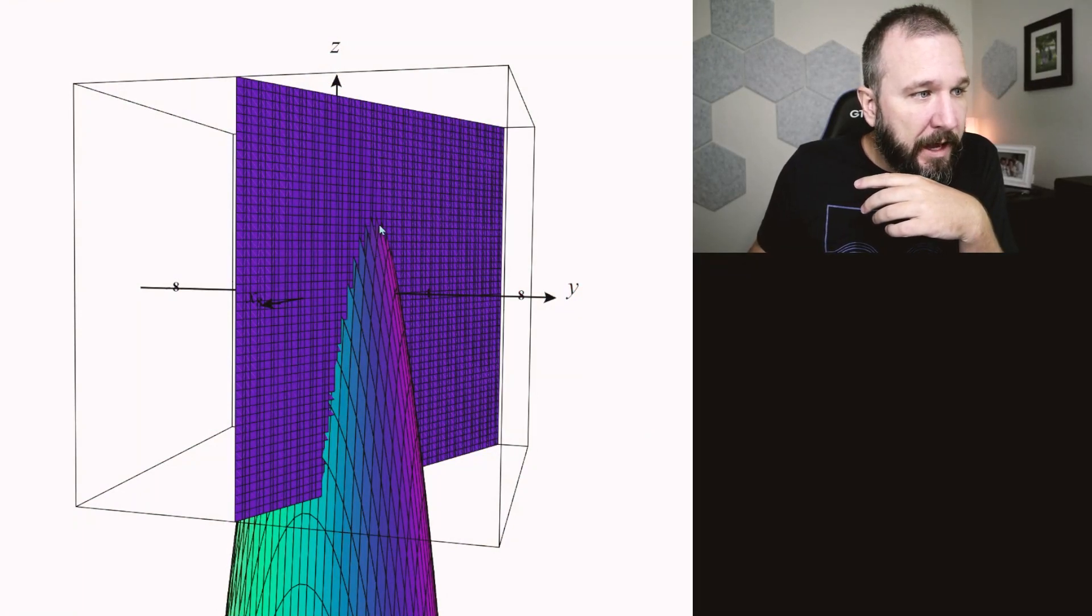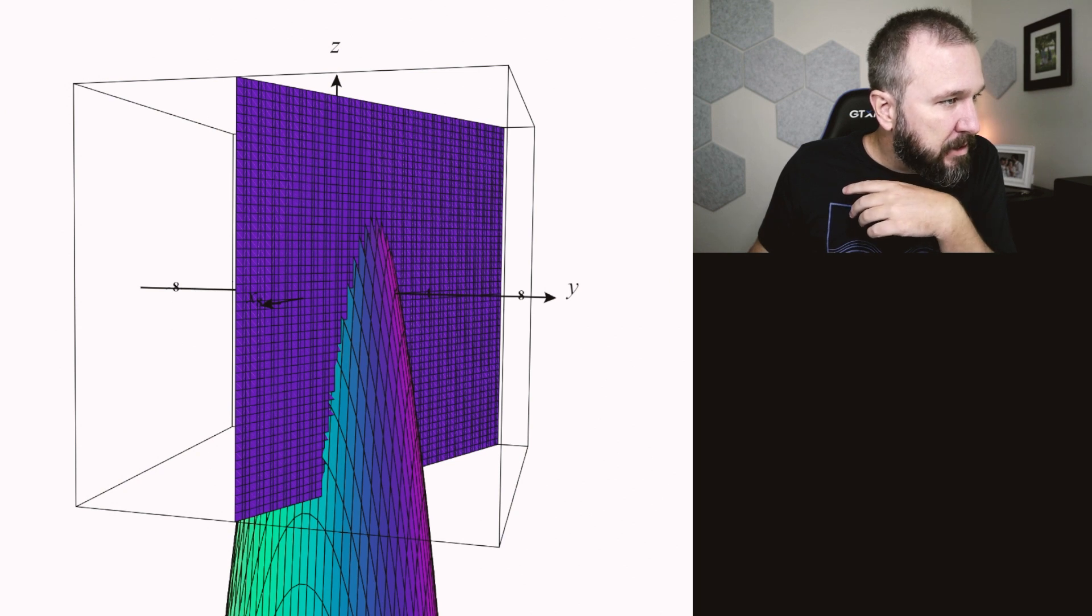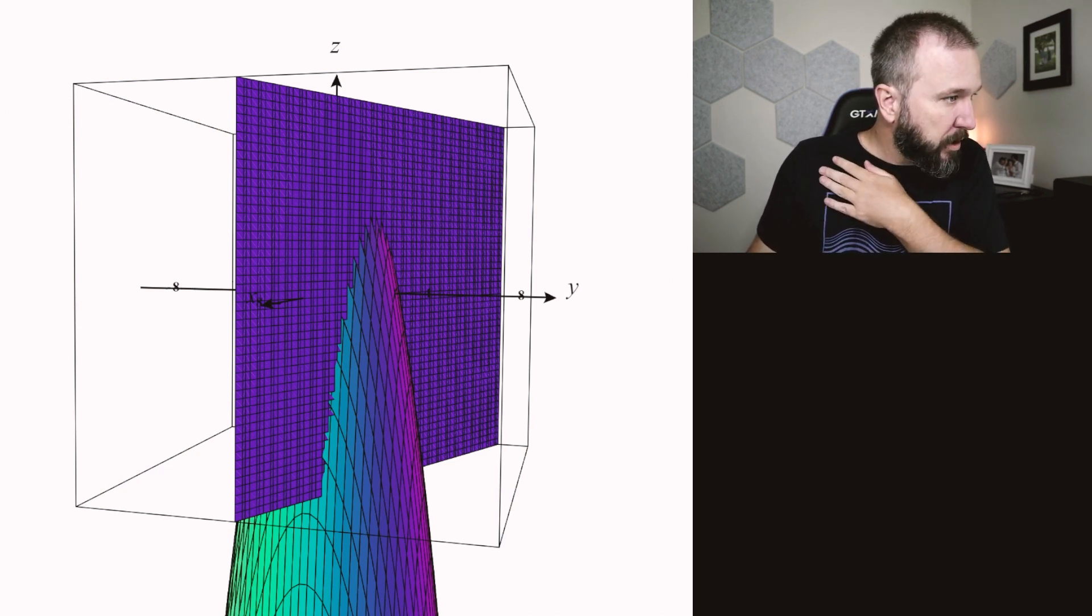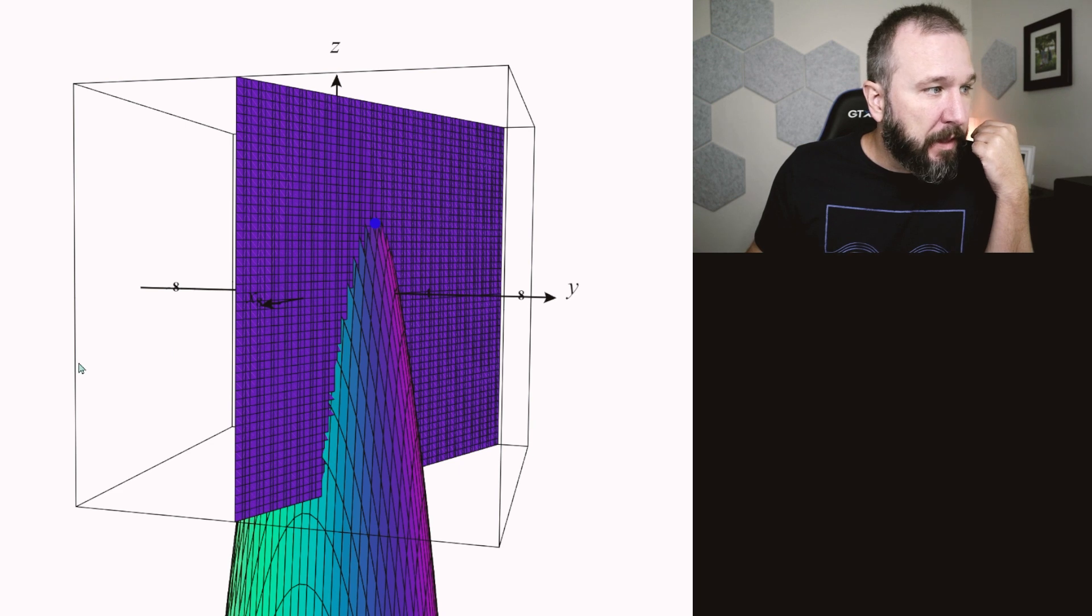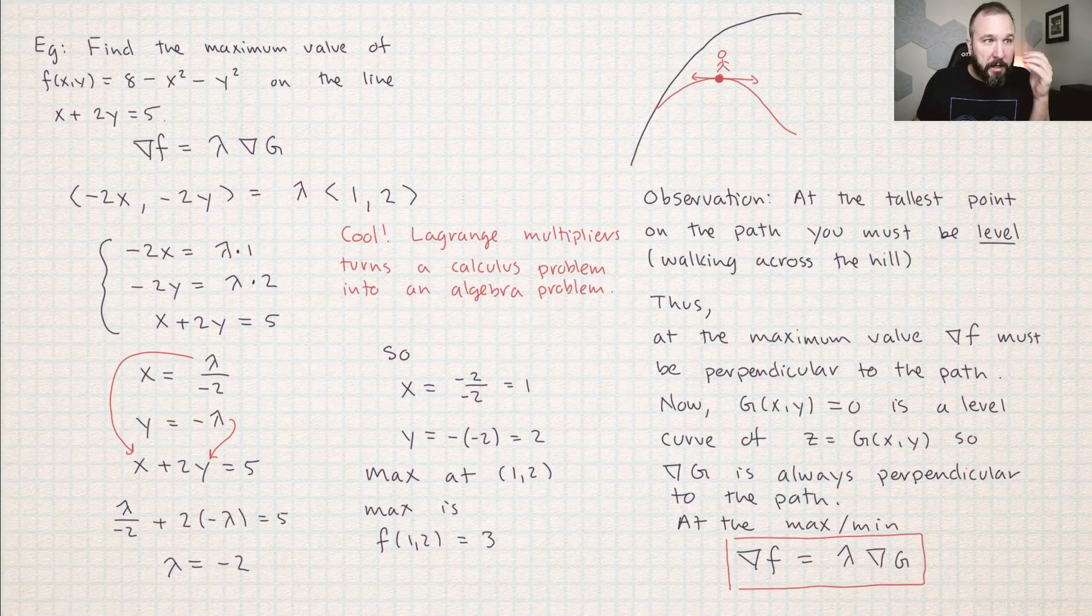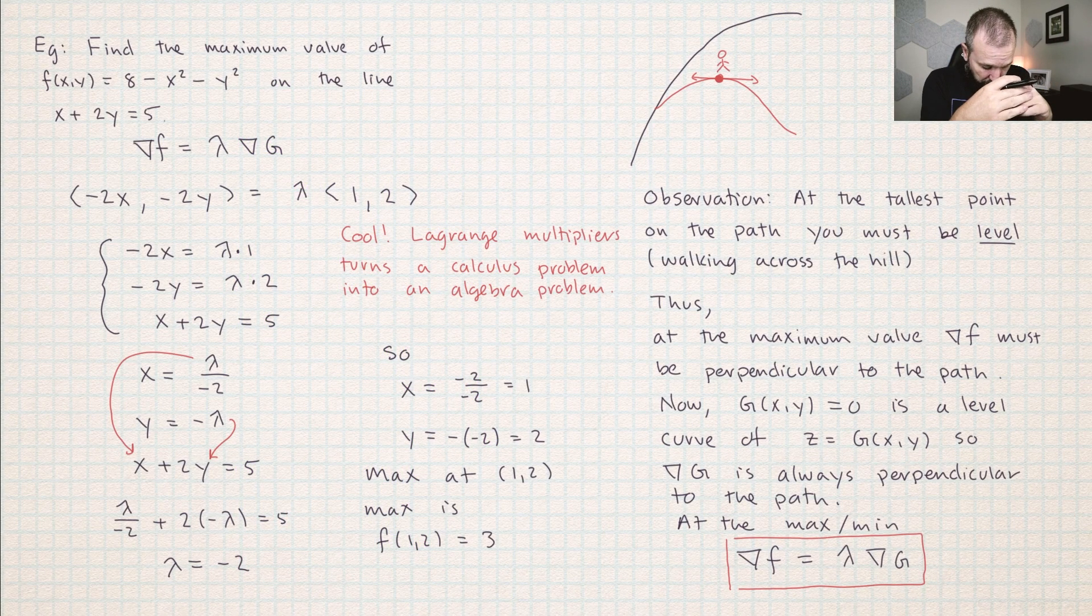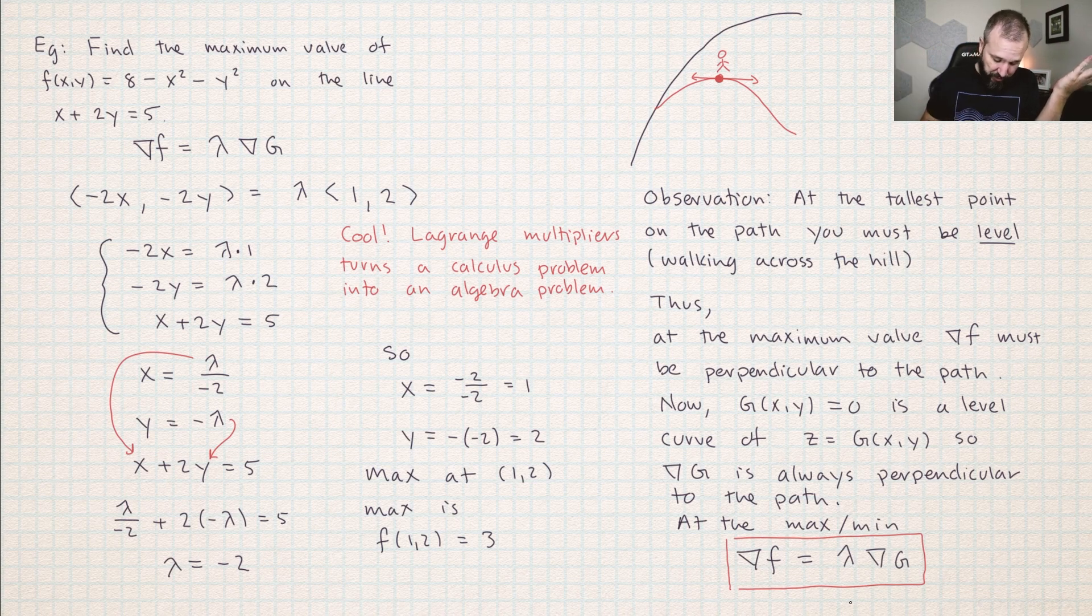That tells you this point right here. That maximum value happens at... let's see, it's at (1, 2). So x should be 1 and y should be 2. There it is, there's that blue dot right there. The height there is 3. That's what you get when you plug that into the function. So that blue dot is the maximum value. So it worked. This is just such an awesome method.